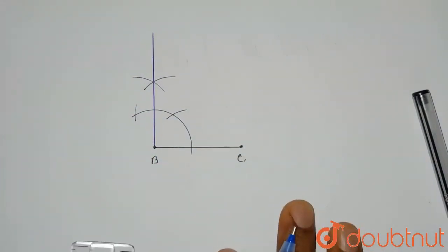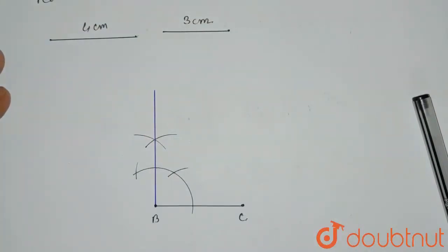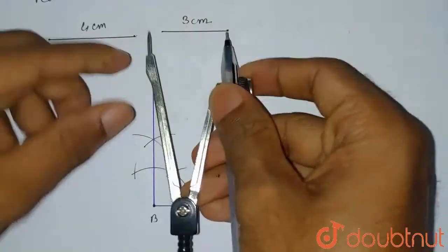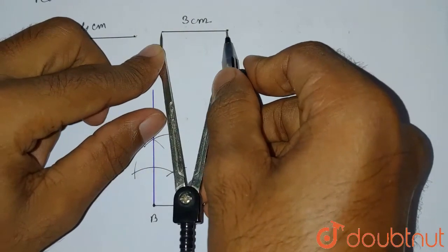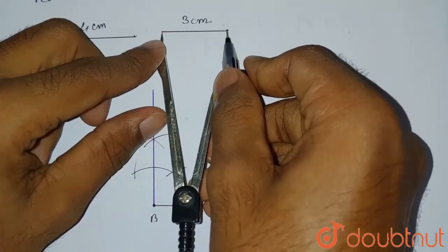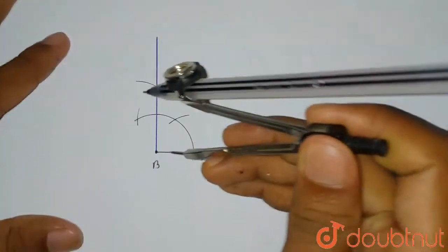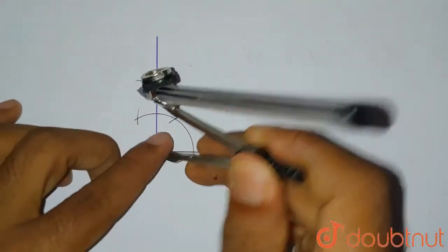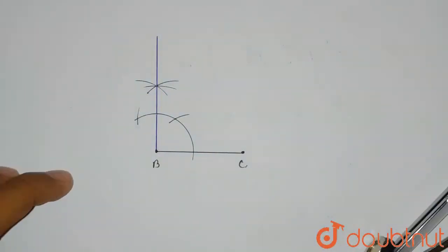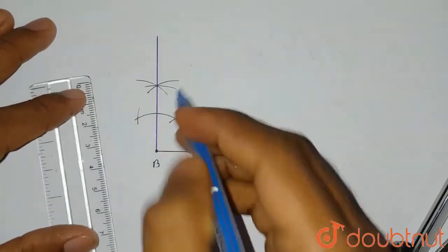Now we have to find our A point, which is 3 cm from B — AB is 3 cm. So we'll take this 3 cm measurement and from B we'll draw an arc. This arc gives us the point that is 3 cm from B, which means this point is A.